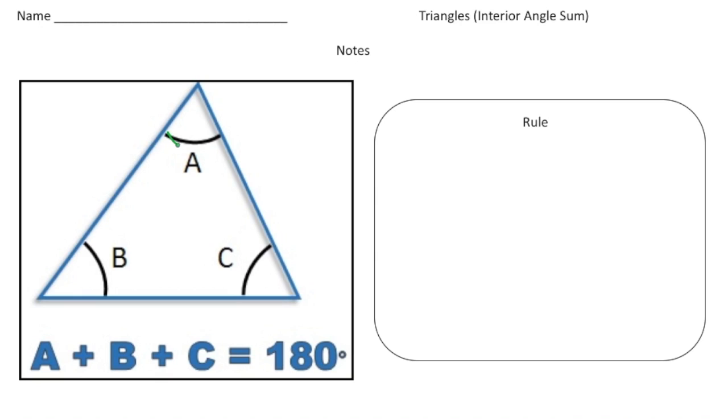So if I add up this angle here, this angle here, and this angle here, and I put them together, it would make 180 degrees. So the key rule is the sum of the interior angles always equals 180 degrees.